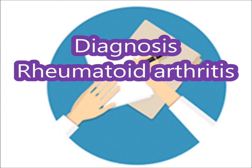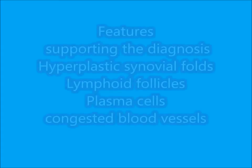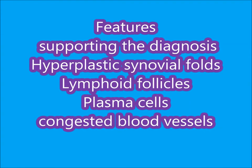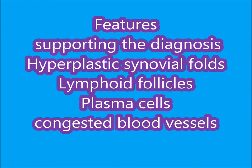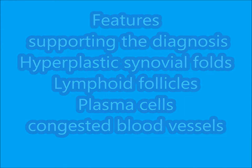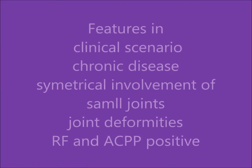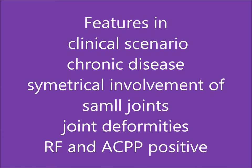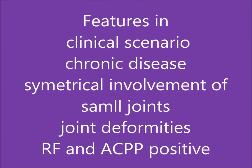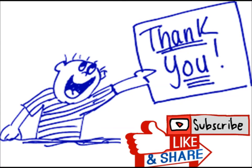Interpret the biopsy and list features which support your diagnosis. The diagnosis is rheumatoid arthritis. Features supporting the diagnosis on biopsy are: hyperplastic synovial folds, lymphoid follicles, plasma cells, and congested blood vessels — this is called pannus. In the clinical scenario, supporting features are: chronic disease, symmetrical involvement of small joints, joint deformities, and positive rheumatoid factor and anti-citrullinated protein peptides.